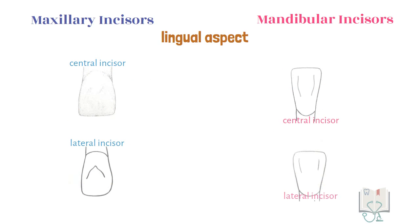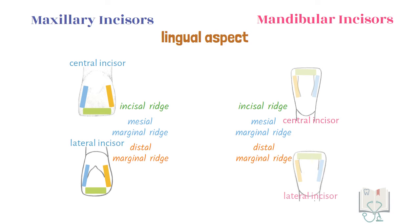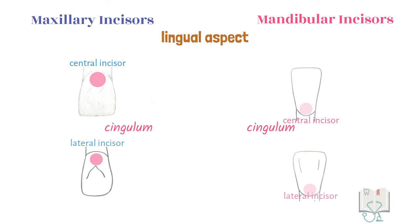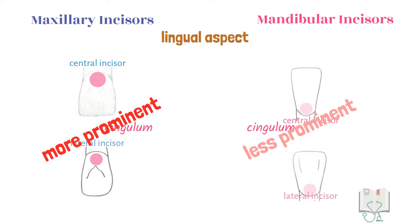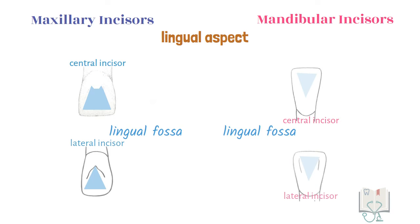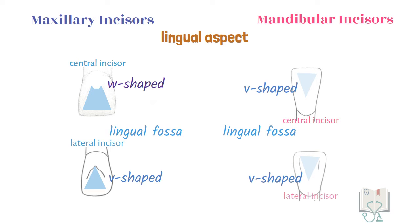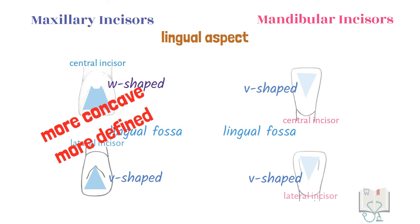Moving to the lingual aspect, the differences seen from the labial aspect are reflected here as well. All the ridges — incisal ridge, mesial marginal ridge, and distal marginal ridge — are more prominent in maxillary incisors than in mandibular incisors. Similarly, the cingulum is more prominent in maxillary incisors. The lingual fossa in all incisors is V-shaped except in the maxillary central incisor, in which it is W-shaped. In both maxillary incisors, the lingual fossa is more concave and more defined than in mandibular incisors.